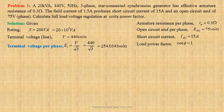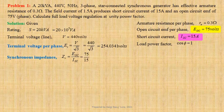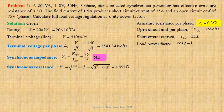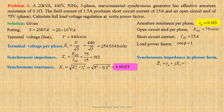Let us now determine synchronous impedance: Zs equals EOC divided by ISC, that is 75 divided by 15, giving us 5 ohm. Expression for synchronous reactance: Xs equals root over (Zs² minus Rs²). Using values we get root over (5² minus 0.3²), that gives us 4.991 ohm. Synchronous impedance may be written in phasor form as Zs equals 0.3 plus J4.991 ohm.